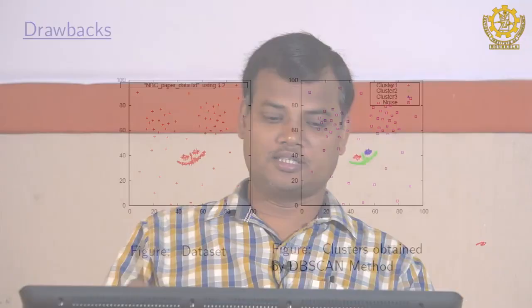We have seen how to find the value of epsilon and minimum point. While finding the value of epsilon, we assume that the k-th distance within a cluster will remain the same. That was the basic assumption, but there is a problem here we can see. This is the dataset on the left side.